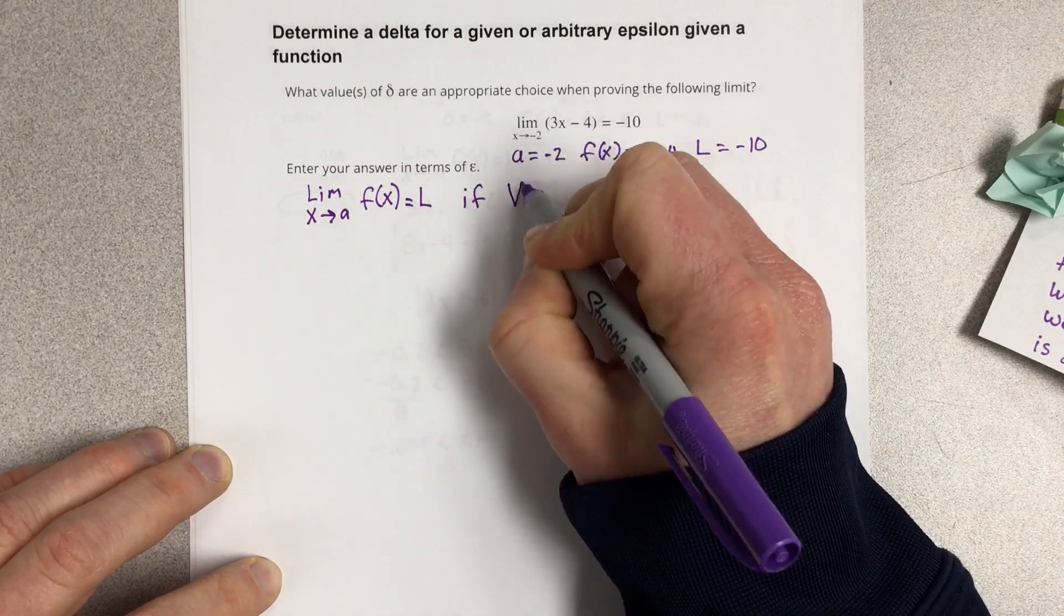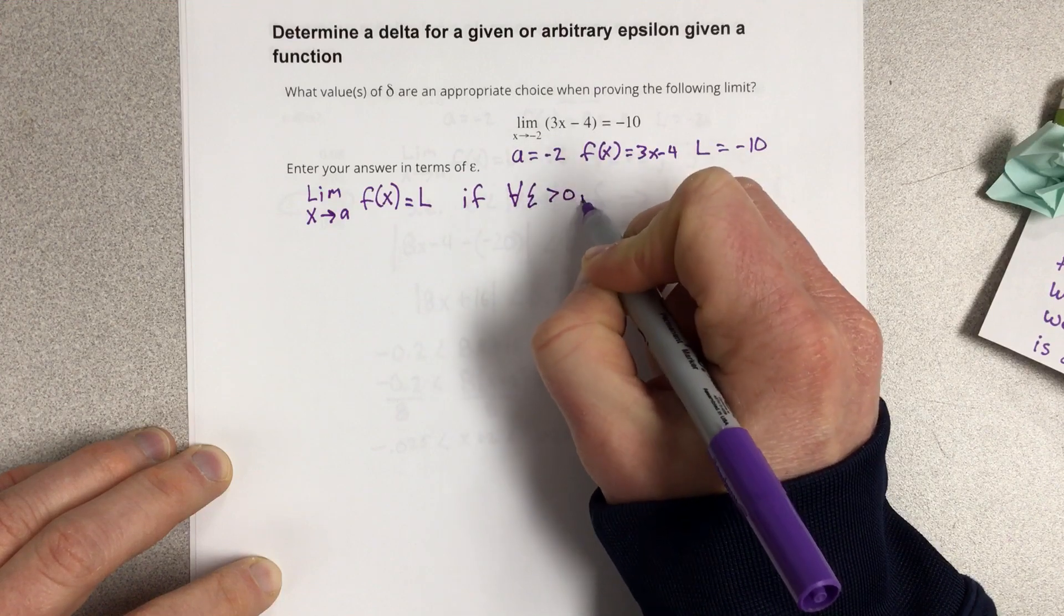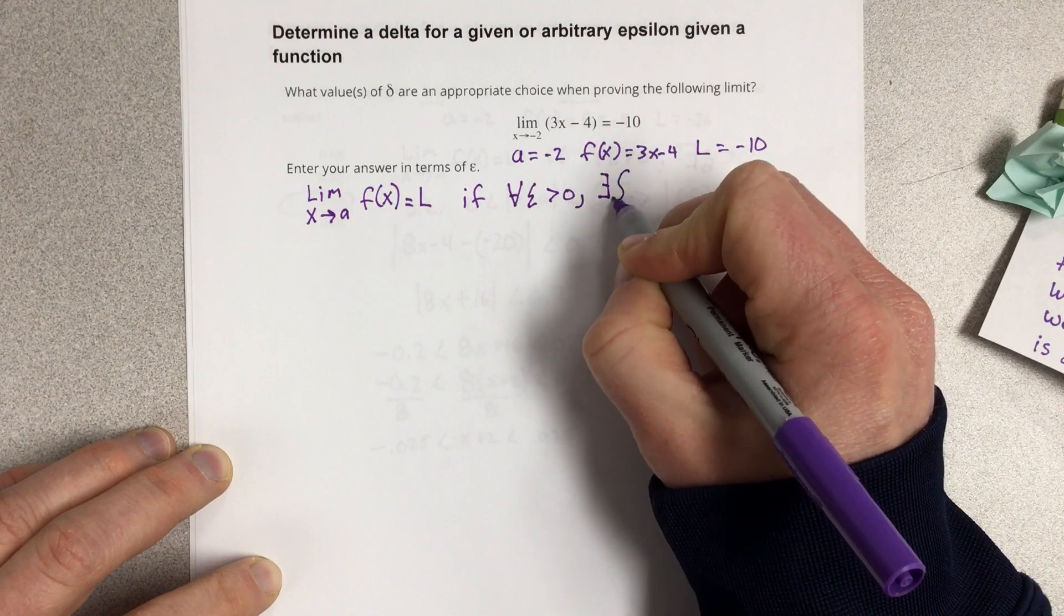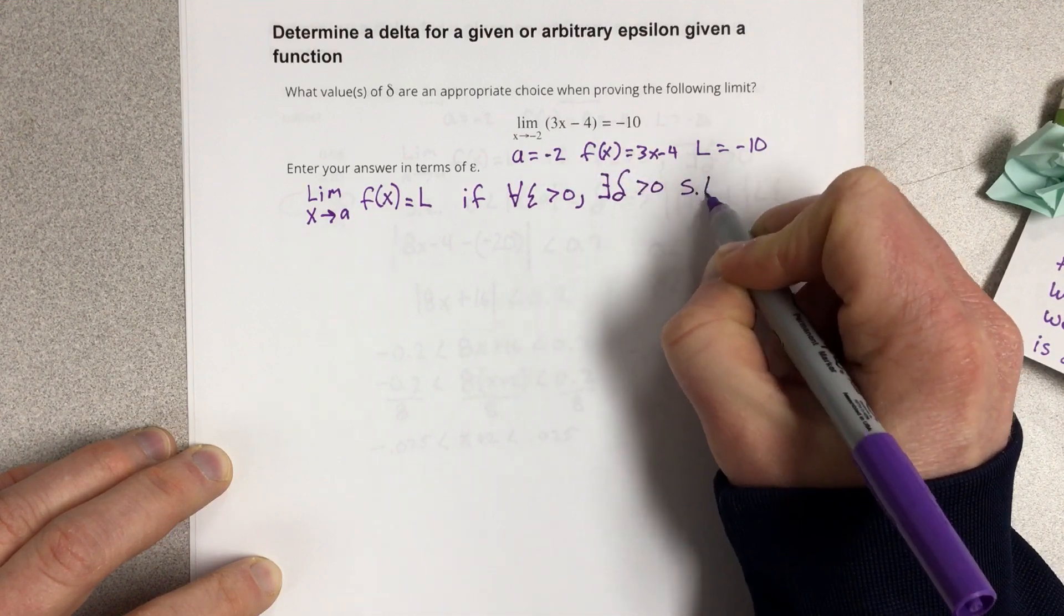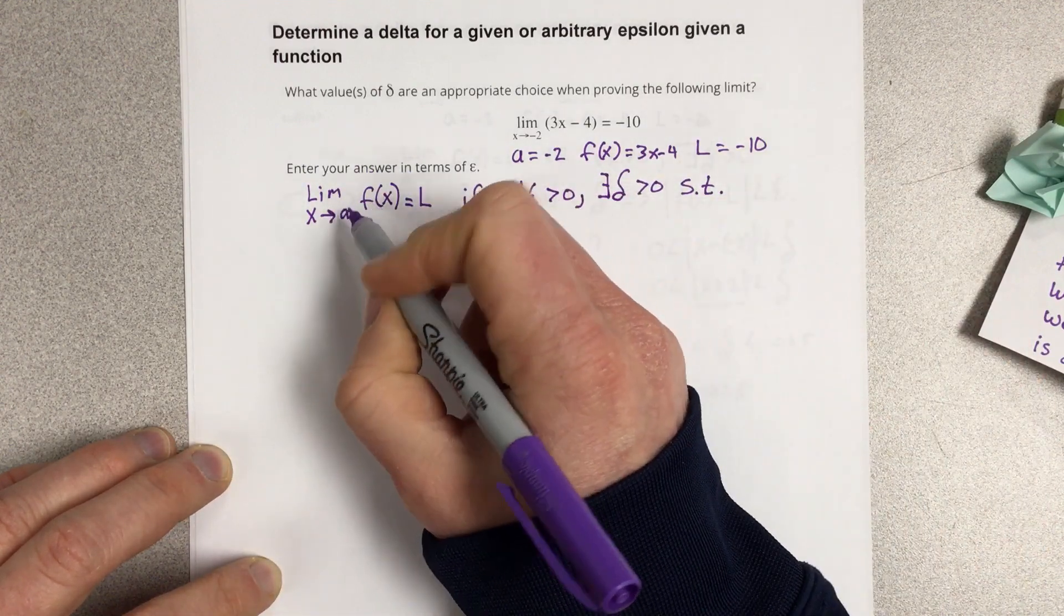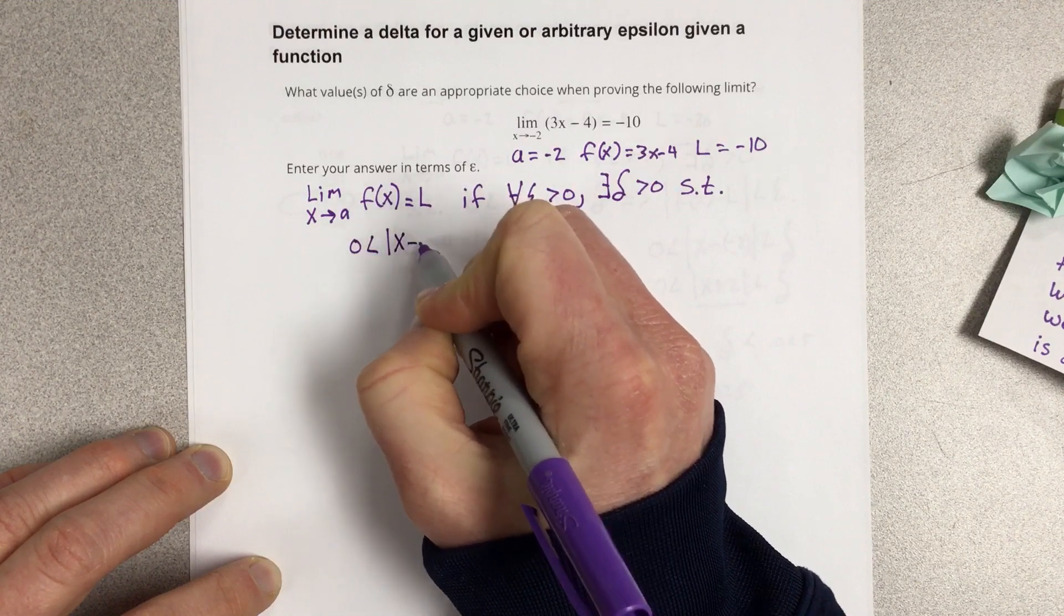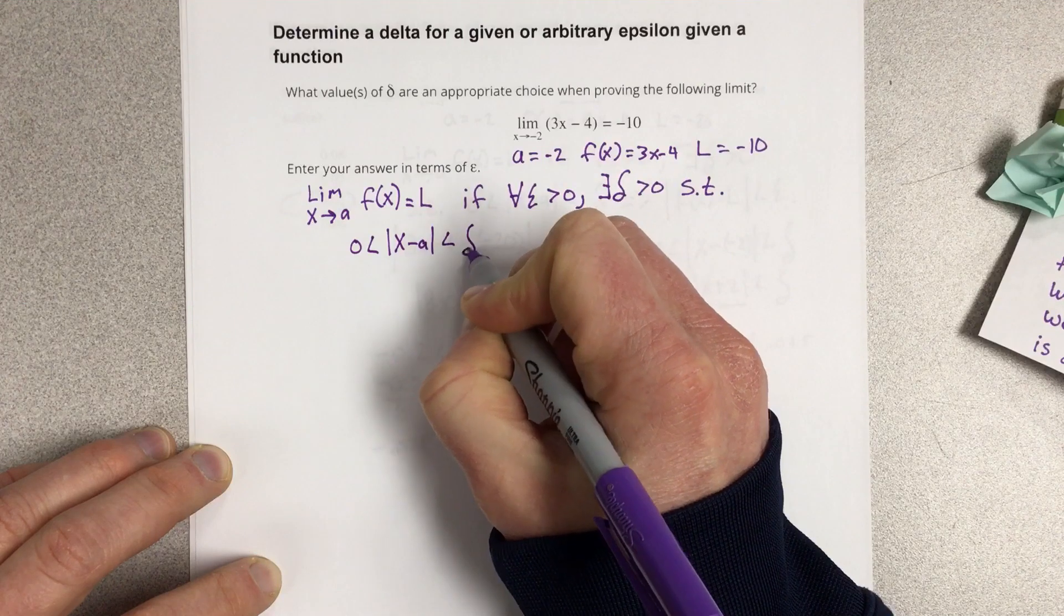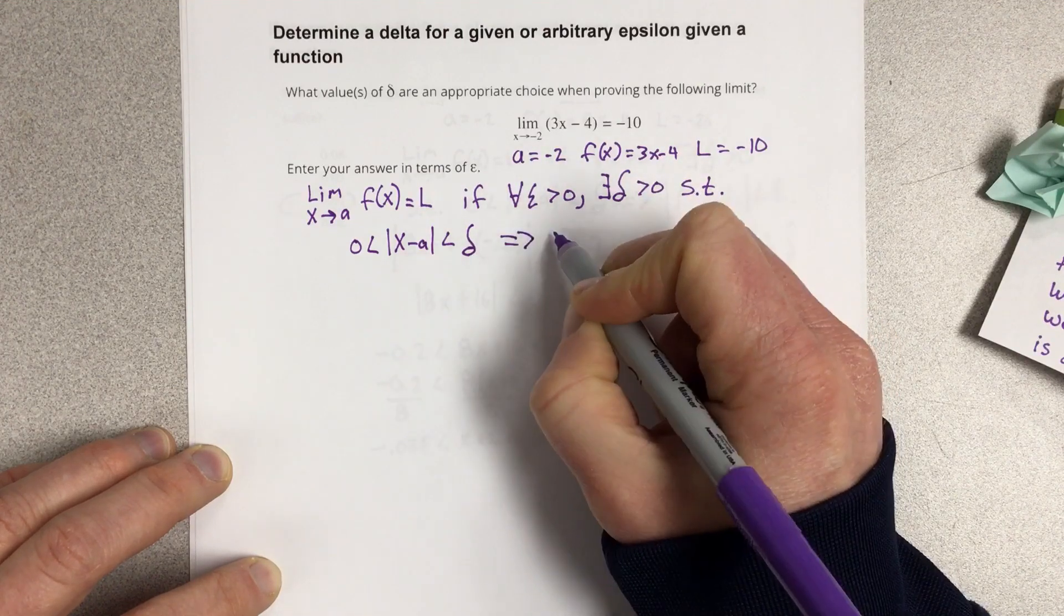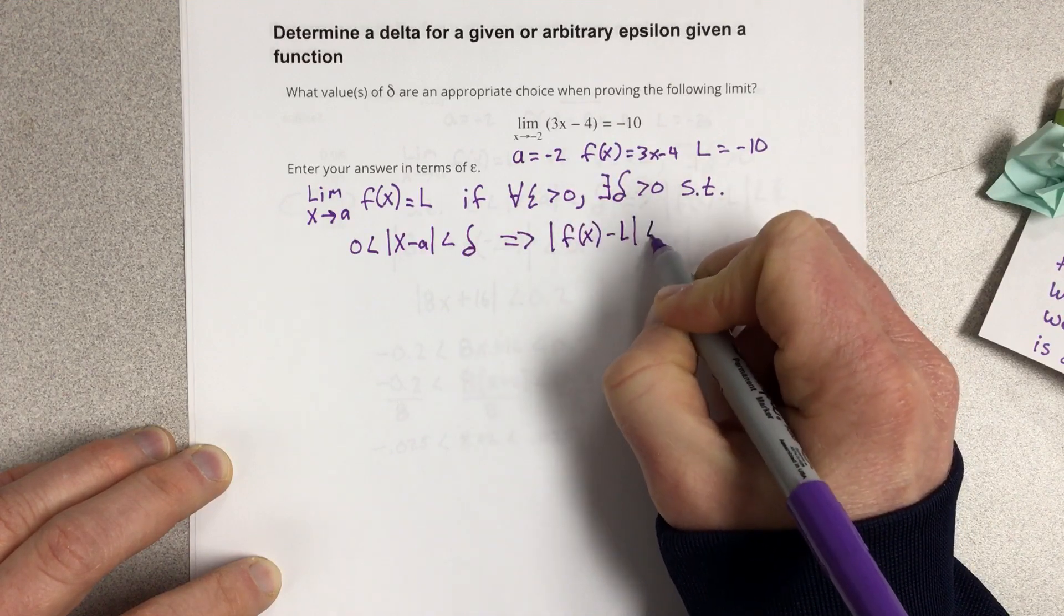for any epsilon greater than 0 there exists a delta greater than 0 such that 0 less than absolute value of x minus a is less than delta implies absolute value of f(x) minus L is less than epsilon.